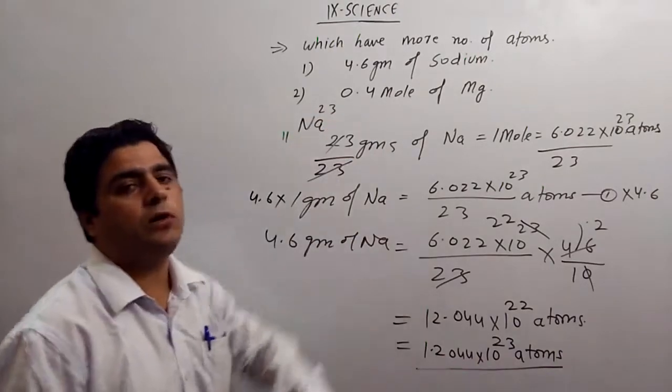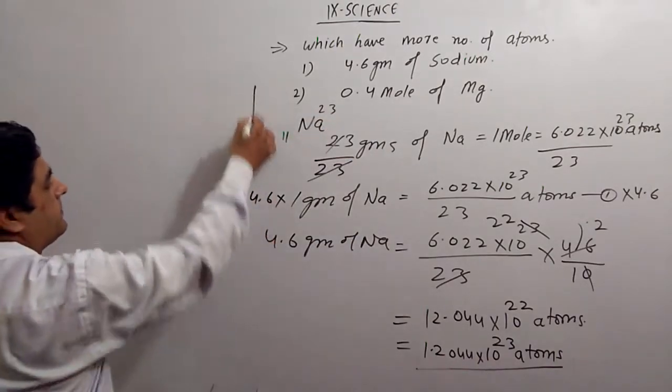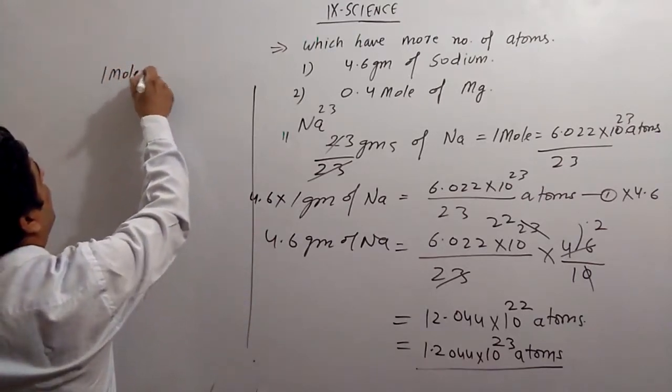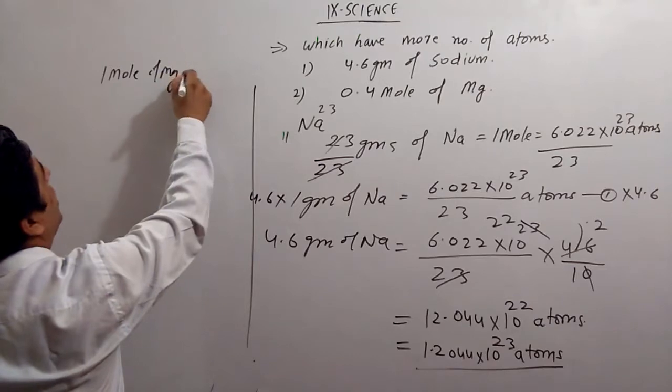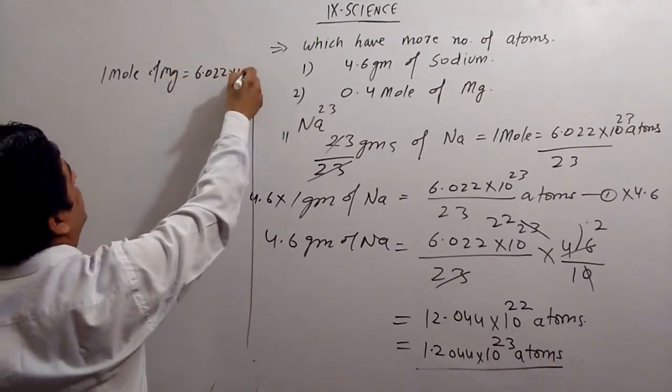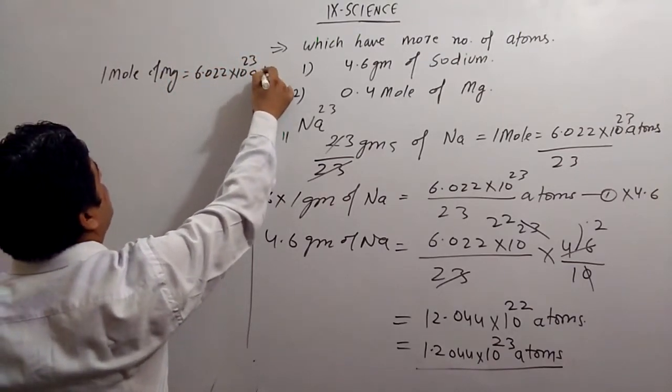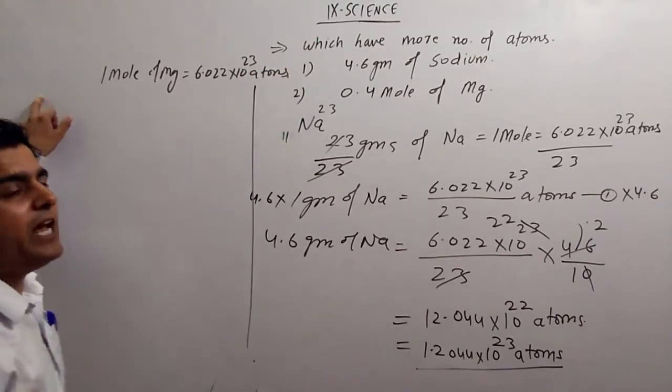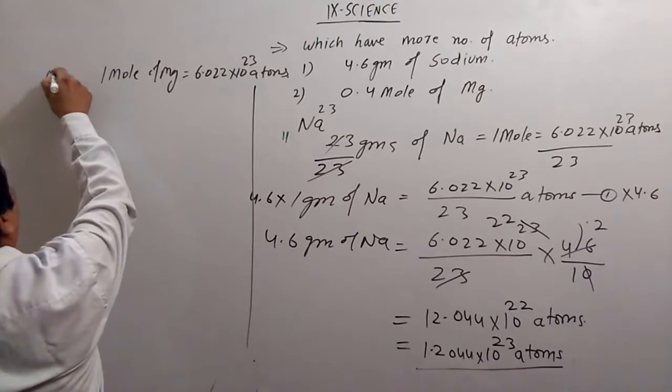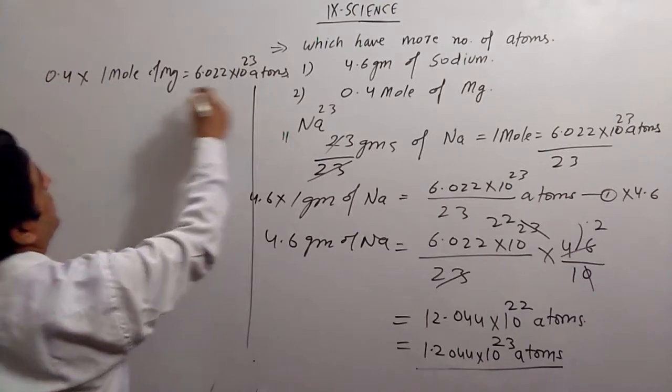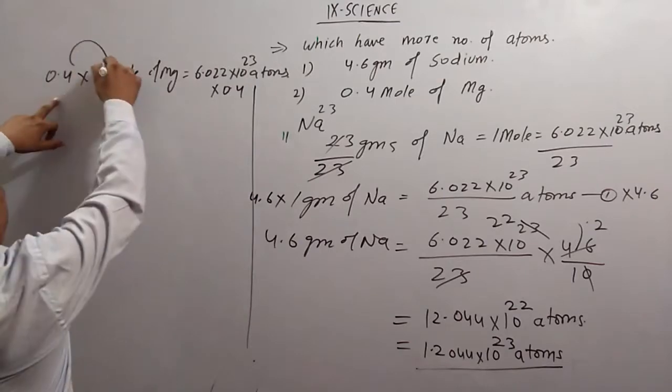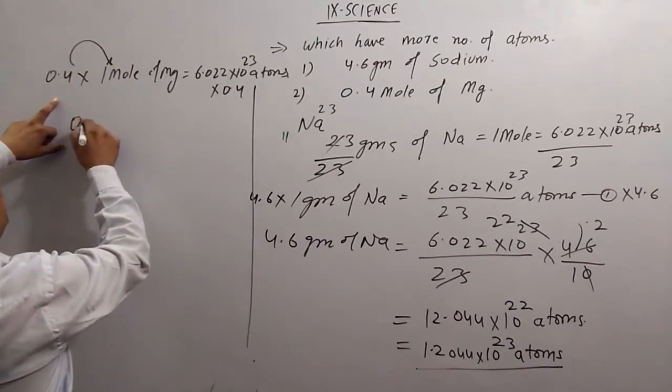Now, 0.4 mole of magnesium. Listen. 1 mole of magnesium has Avogadro's number, which equals 6.022 × 10^23 atoms. When you multiply this by 0.4, it becomes 0.4 mole.